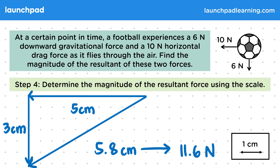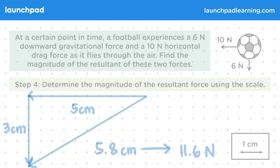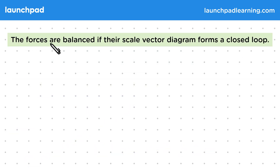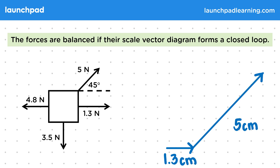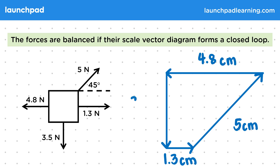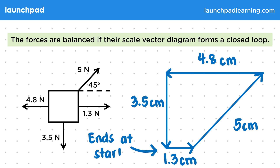But what happens to our diagram if the forces are already balanced? The forces are balanced if their scale vector diagram forms a closed loop. Take this box with multiple forces acting on it. We can accurately draw a vector diagram using a 1 to 1 scale. This shows us that the forces are balanced, as when we add all of the vectors together it gives zero, as the final vector ends at the start point.